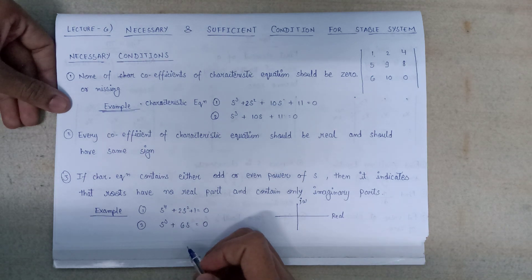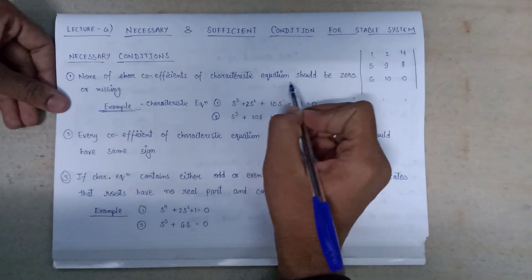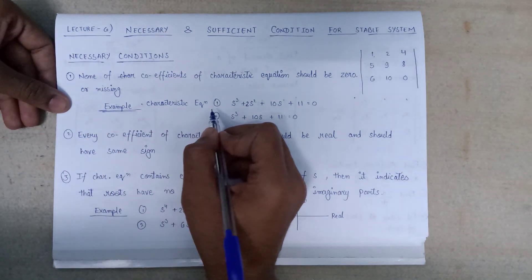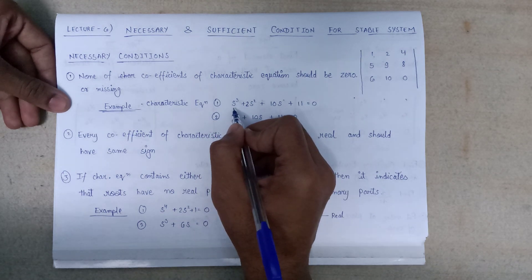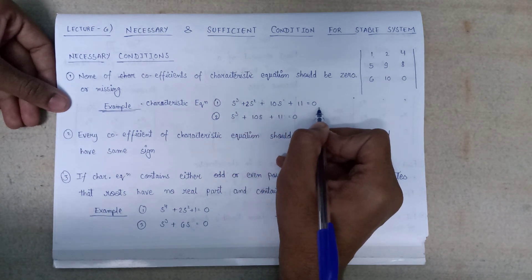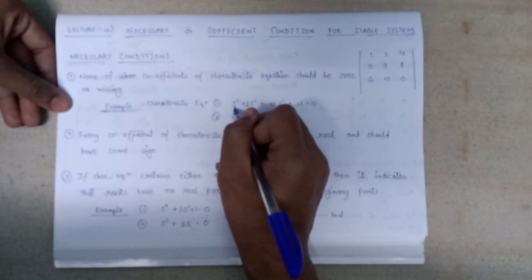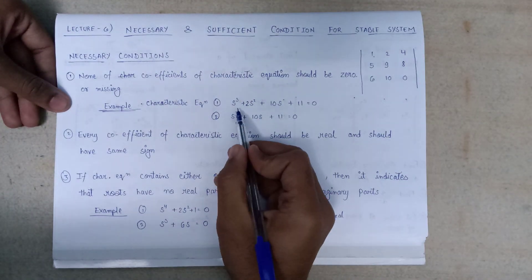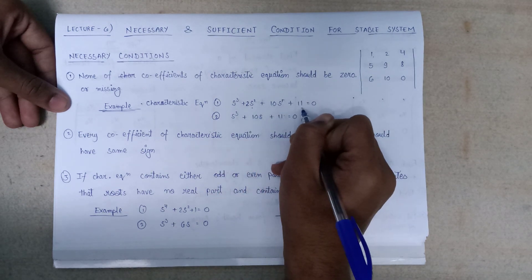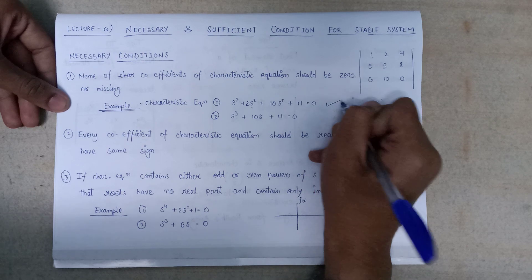According to the first condition, none of the coefficients of the characteristic equation should be zero or missing. Here is an example: the first characteristic equation is s³ + 2s² + 10s + 11 = 0. Each power of s is present — s³, s², s¹, and s⁰ — so none of the coefficients are missing, and this equation satisfies the first necessary condition.